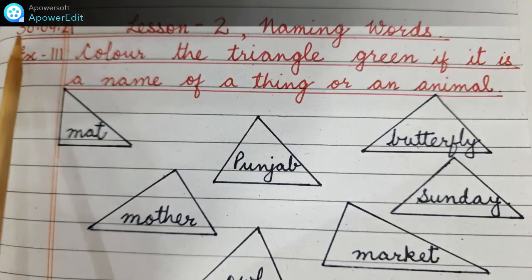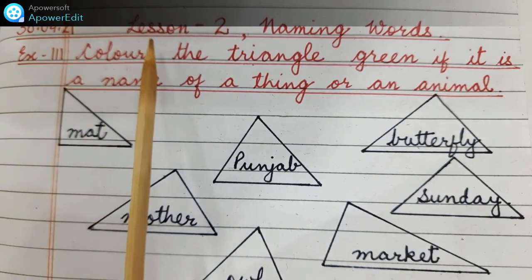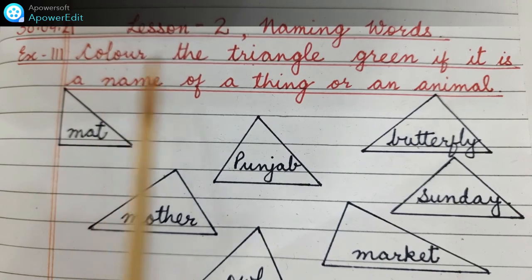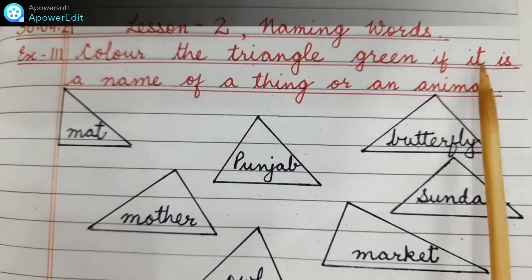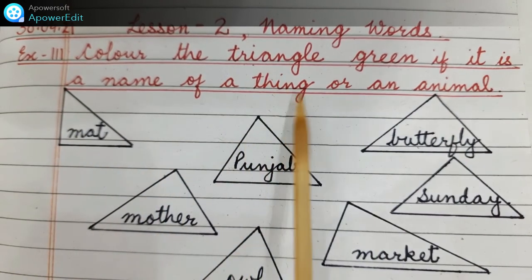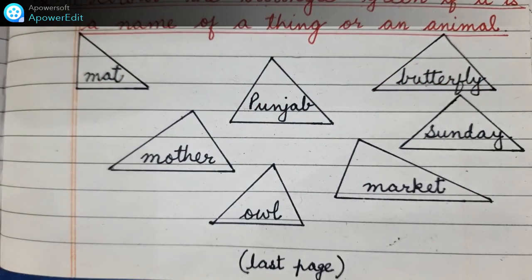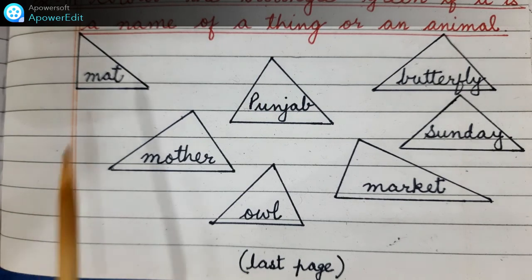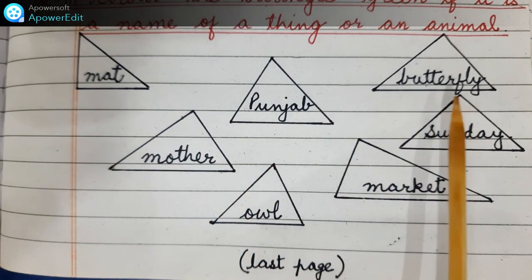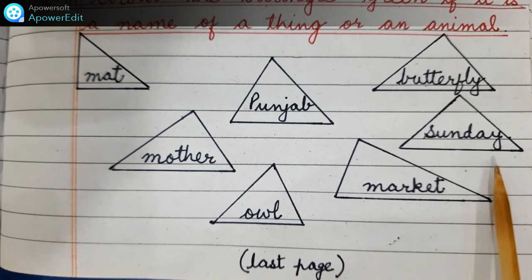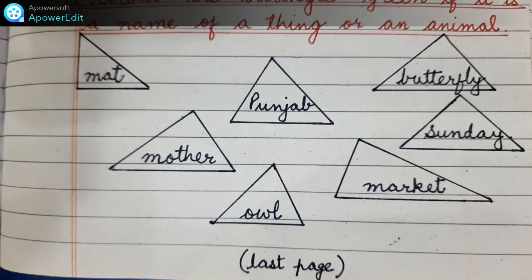Put the date 30/4/21. Lesson number 2, naming words. Exercise 3: color the triangle green if it is a name of a thing or an animal. Some triangles are given to you and inside the triangle is written: mat, Punjab, butterfly, mother, owl, market, Sunday. You have to color the triangles green if it is a name of a thing or an animal. Thank you.